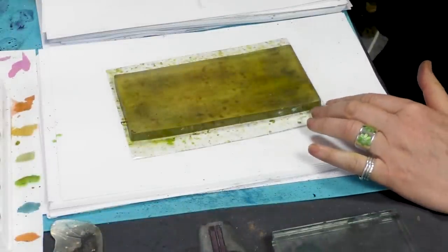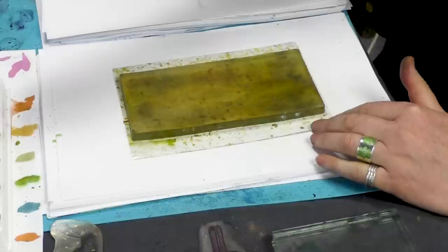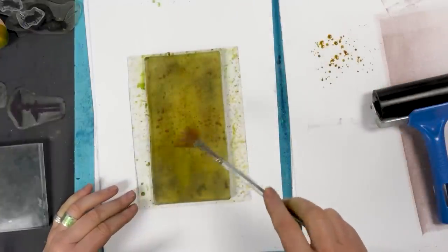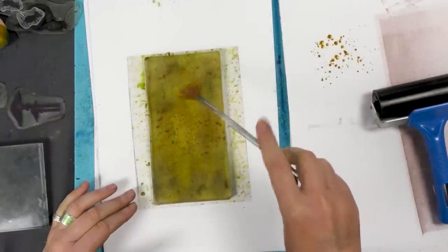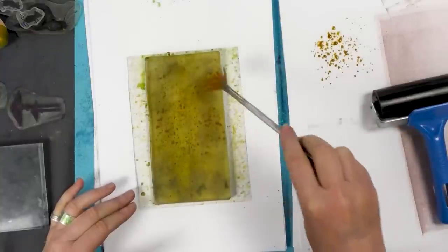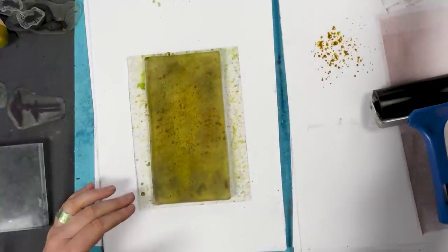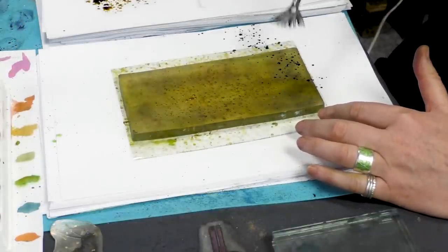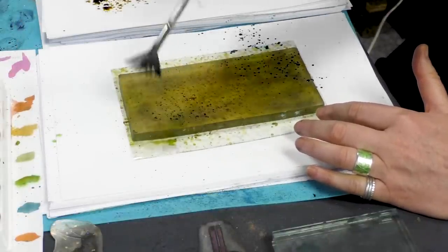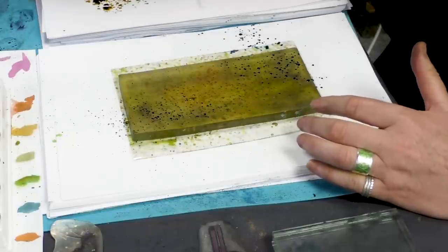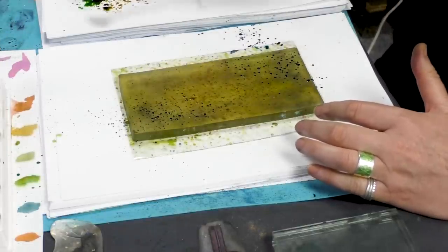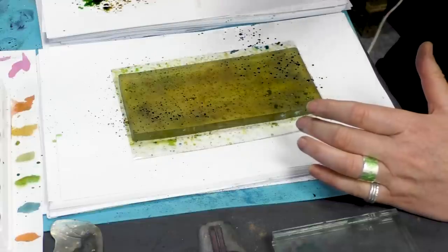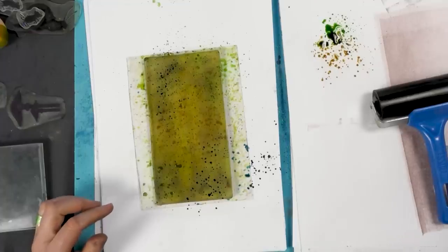So I'm going to use my fan brush now. I'm picking up, this is okra, and I'm just going to tap that over the top. And then we're going to use the Prussian blue, which is a lovely blue, and then some lime green as well. And let's see what we get.